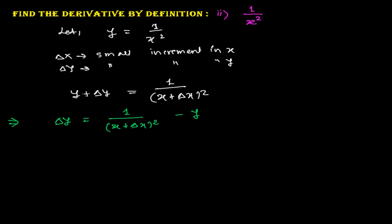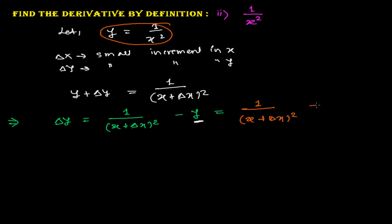So, except delta y, send everything to the right side and convert it into the form involving x plus delta x. I put 1 over (x plus delta x) squared minus y, and in the place of y I will use this value — since y equals 1 over x squared — so it becomes 1 over (x plus delta x) squared minus 1 over x squared.